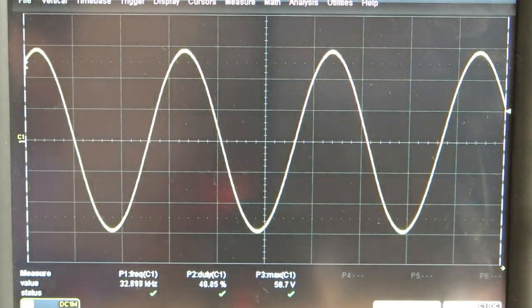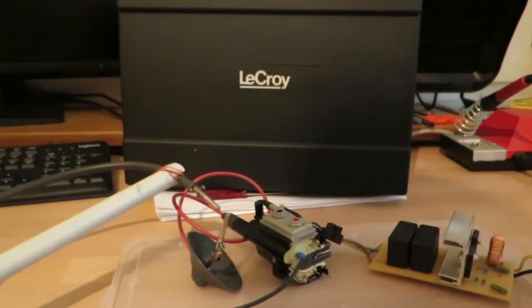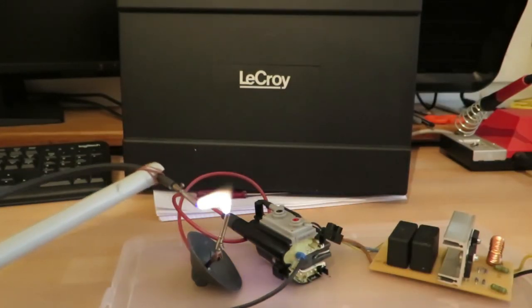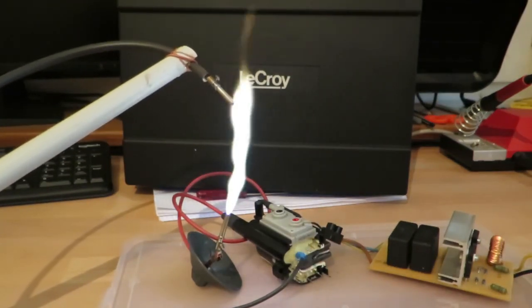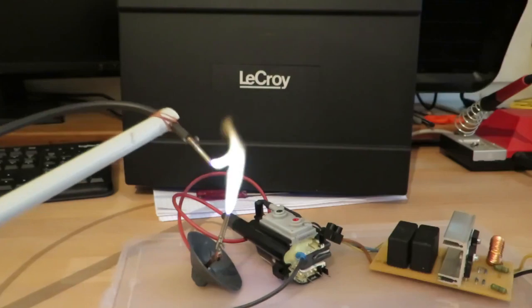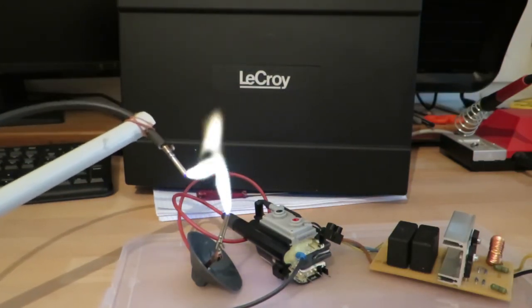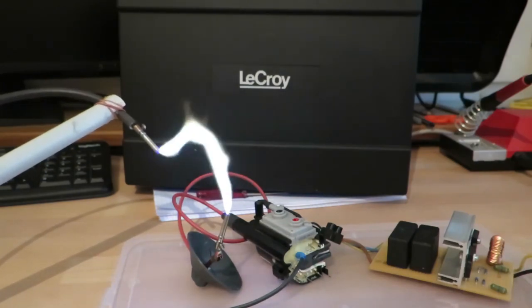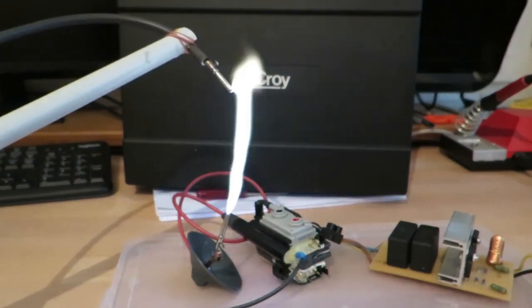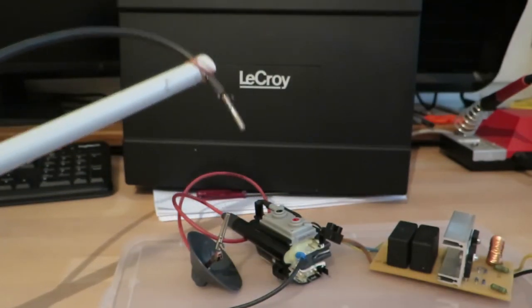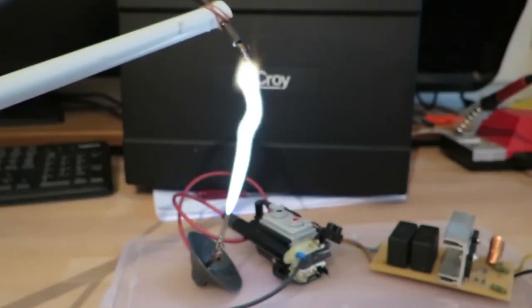So now this is the part everyone has been waiting for, and it's where I'm going to draw the arcs. Now the power supply I used for this was supplying about 28 volts and the current consumption was about 11 amps, so the power was about 300 watts. And considering that the arcs are very hot and also reasonably long, I would say that's quite good. So yeah, I hope you enjoy the arcs.